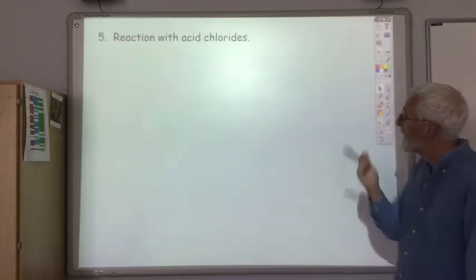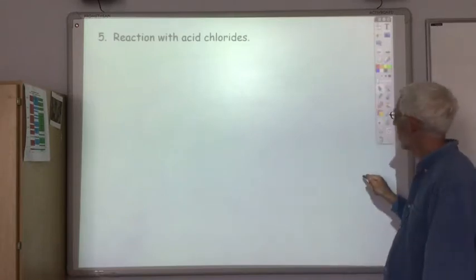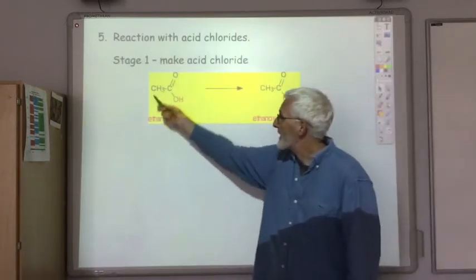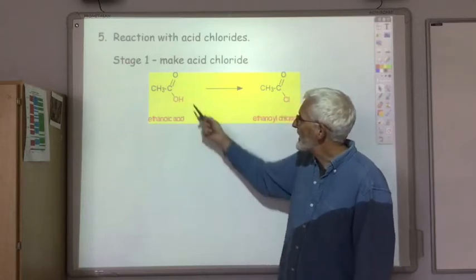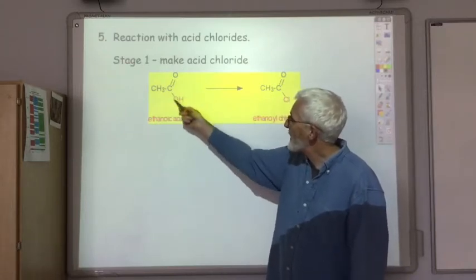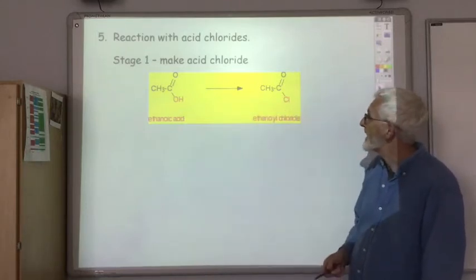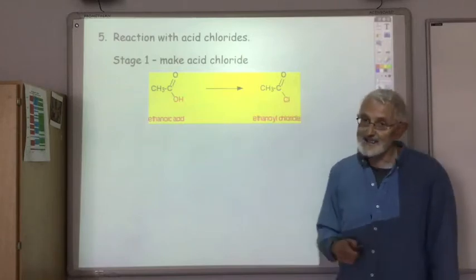So reaction of alcohol with an acid chloride. So what is an acid chloride? Okay, so here's a carboxylic acid. In this case, ethanoic acid. An acid chloride, we remove that OH group and replace it with a Cl. So we've got C double bond O, Cl. That's an acid chloride.